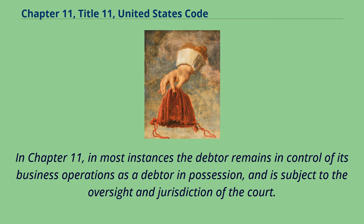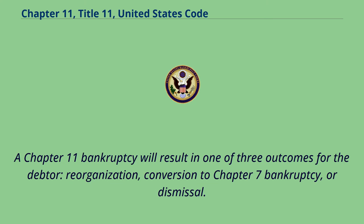In Chapter 11, in most instances the debtor remains in control of its business operations as a debtor in possession, and is subject to the oversight and jurisdiction of the court. A Chapter 11 bankruptcy will result in one of three outcomes for the debtor: reorganization, conversion to Chapter 7 bankruptcy, or dismissal.